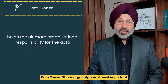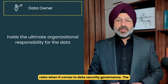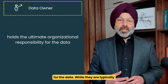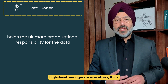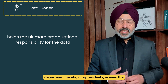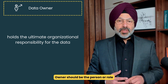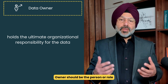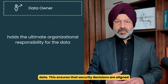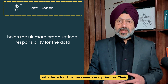Let's start with data owner. This is arguably one of the most important roles when it comes to data security governance. The data owner holds the ultimate organizational responsibility for the data. While they are typically high-level managers or executives — think department heads, vice presidents, or even the CEO — the data owner should be the person or role with the best understanding of the business value of the data. This ensures that security decisions are aligned with the actual business needs and priorities.